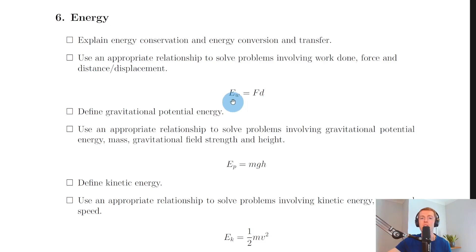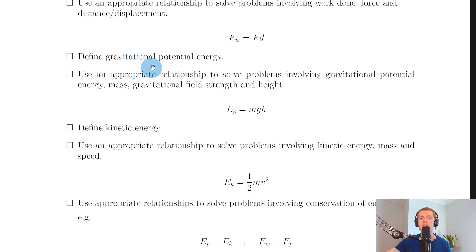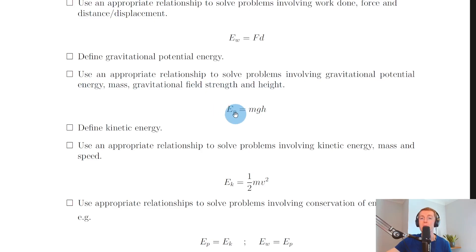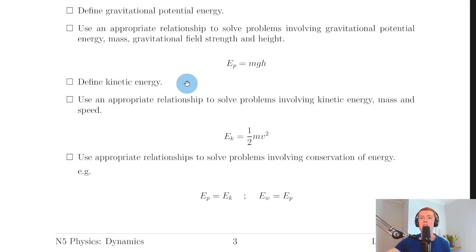You need to define gravitational potential energy — the energy an object has when raised above the Earth's surface by some height — and solve problems using EP = mgh, where EP is gravitational potential energy, m is mass, g is gravitational field strength and h is height. You also need to define kinetic energy — the energy any moving object has — and solve problems using EK = ½mv², where EK is kinetic energy, m is mass and v is speed.